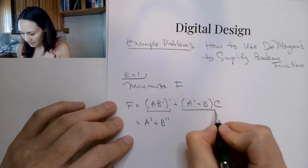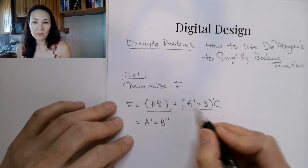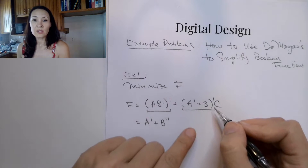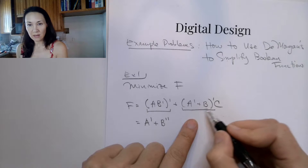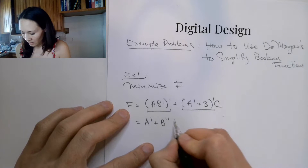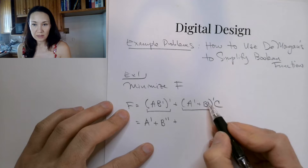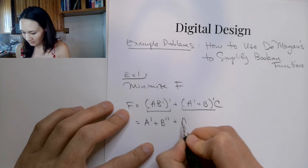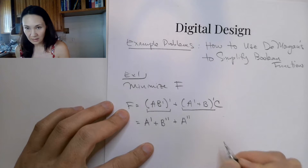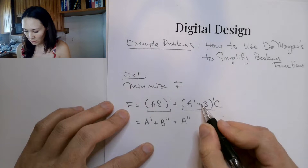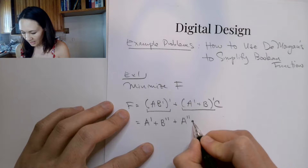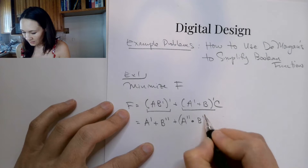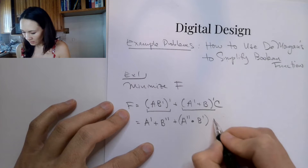These two terms are ORed, and we have a NOT on the outside of this parentheses. So I'm going to apply De Morgan's to this term also. We distribute the NOT to both of these terms and change the OR to an AND. So a' gets another NOT, we change the OR to an AND, and b gets a NOT. This is then still being ANDed with c.